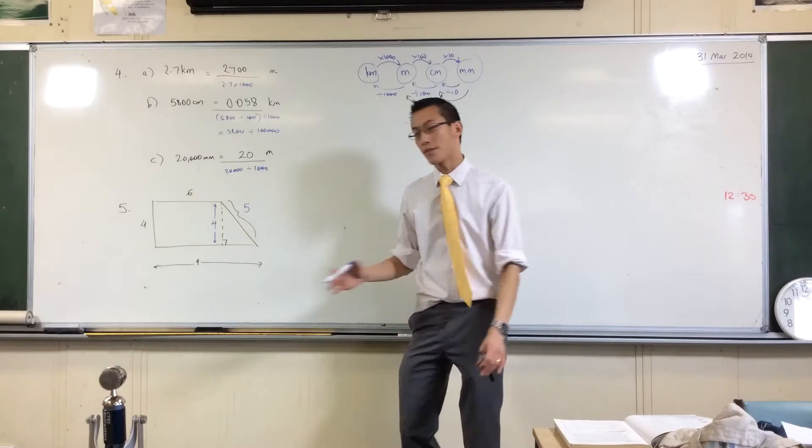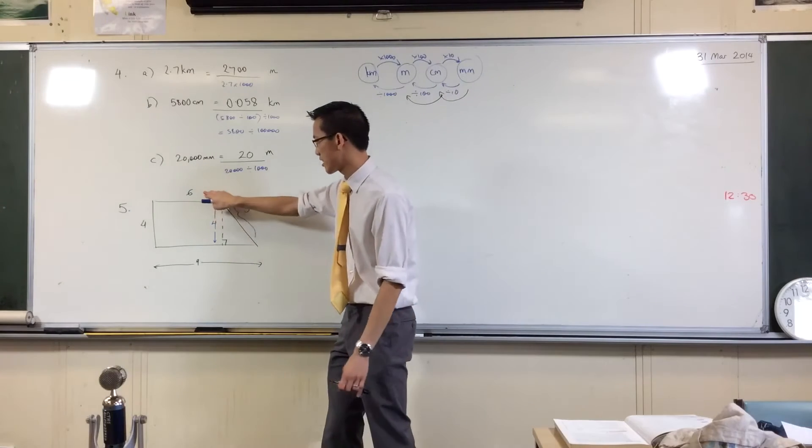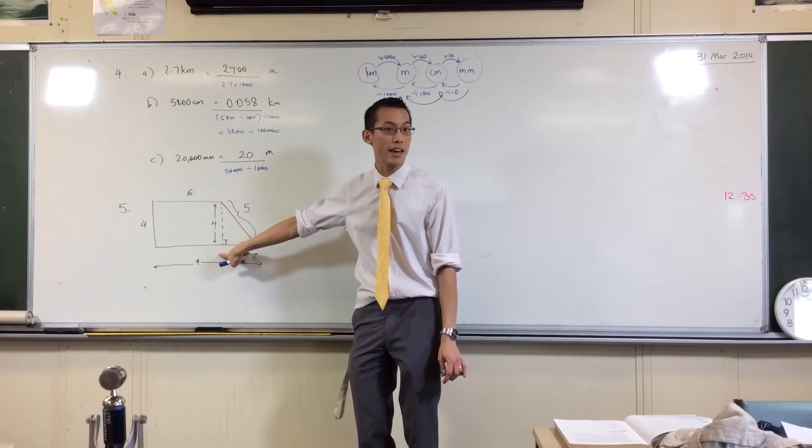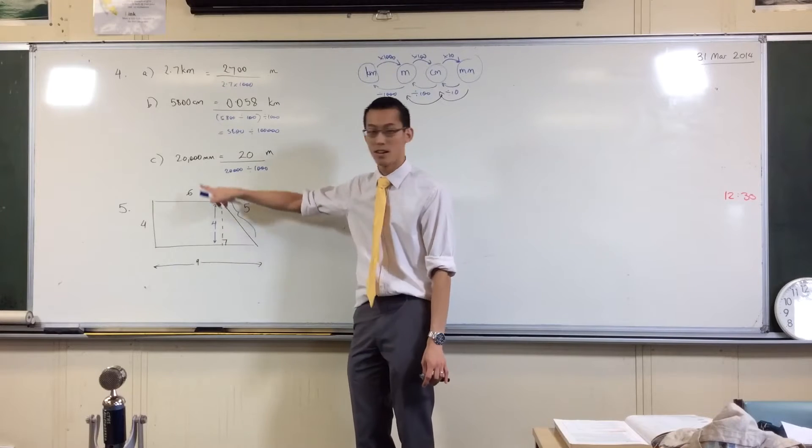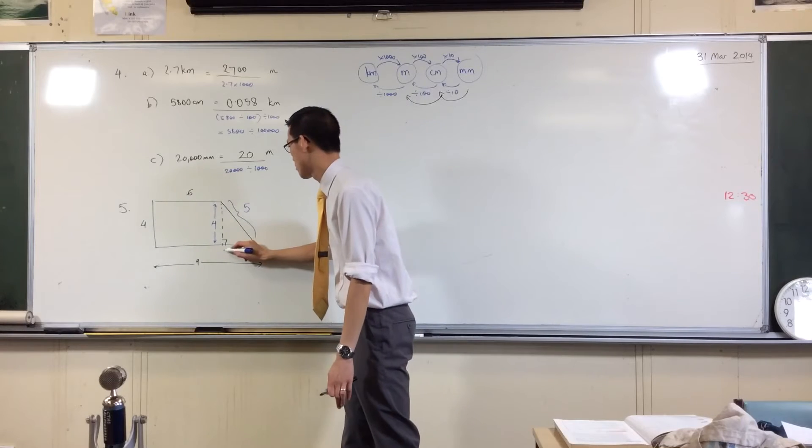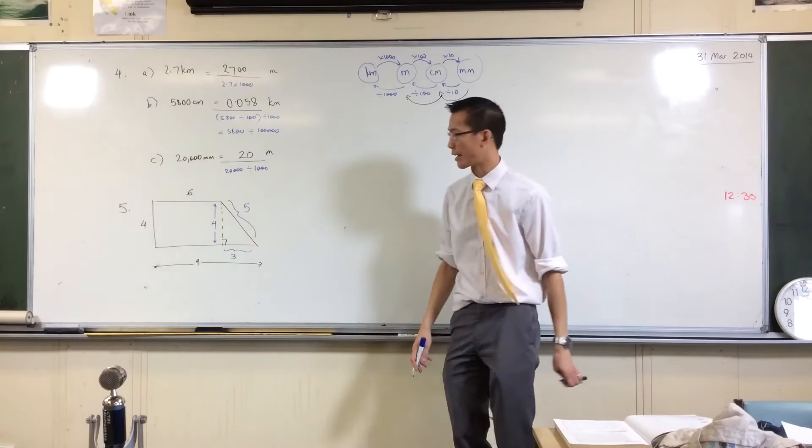Okay, now you have to do a bit of subtraction here. You've got six and nine, so the difference is that little length there. So that's why it'll be nine minus six, which is just three.